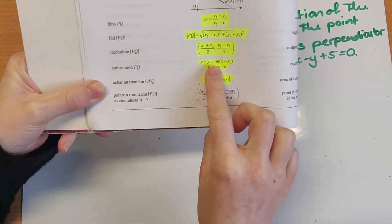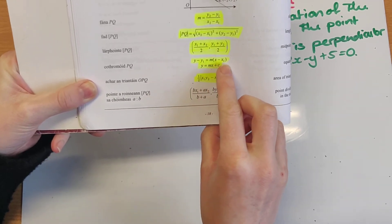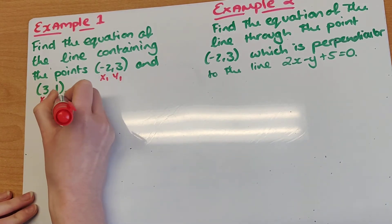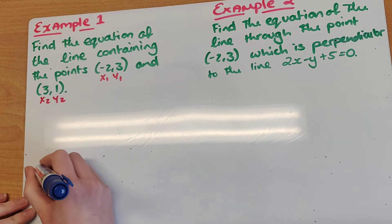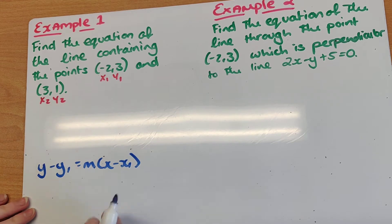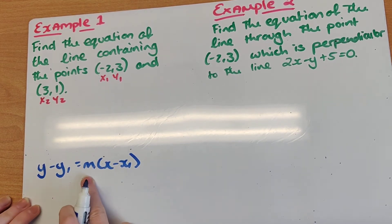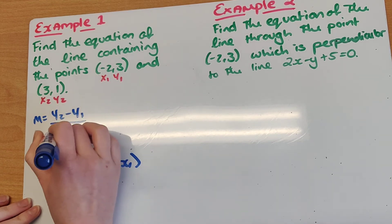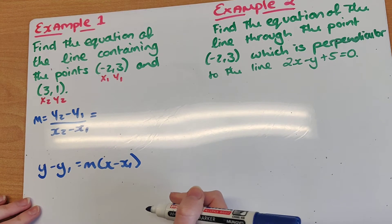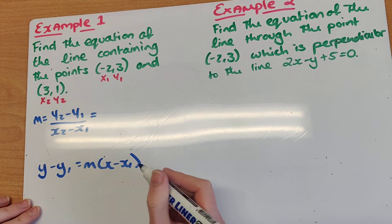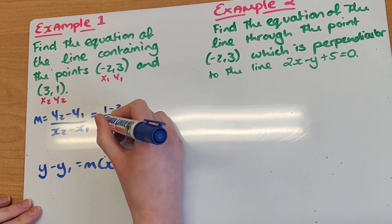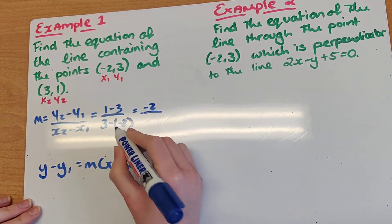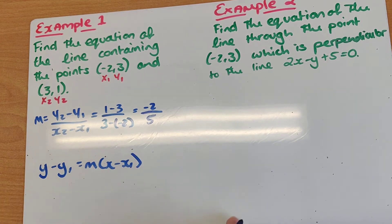If we're finding the equation of a line, we tend to use the first formula: y minus y1 is equal to m by x minus x1. So I'm going to label my two points x1, y1 and x2, y2, and write down that formula. I have x1 and y1, but what I'm missing is m — the slope. My slope formula is y2 minus y1 over x2 minus x1, which is on page 18 of your log tables. Substituting in: 1 minus 3 over 3 minus minus 2 gives minus 2 over 5. Minus by minus is plus, so 3 plus 2 is 5. So my slope is minus 2 over 5.